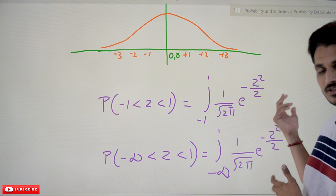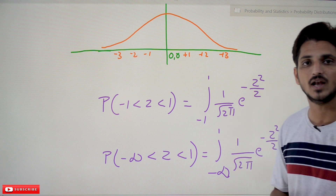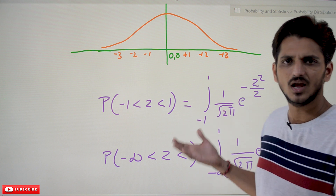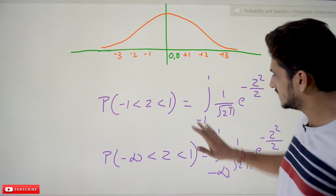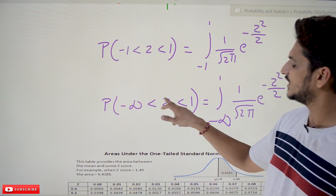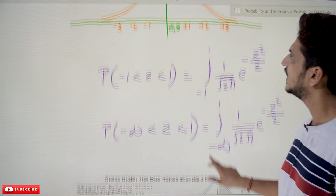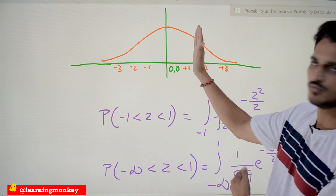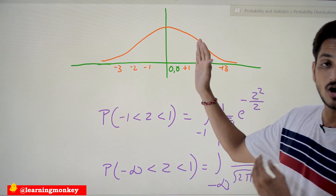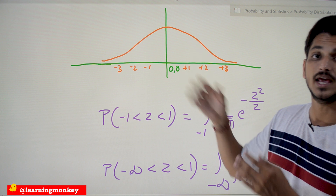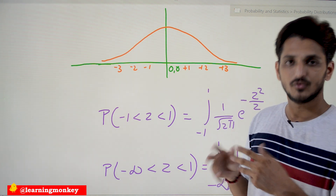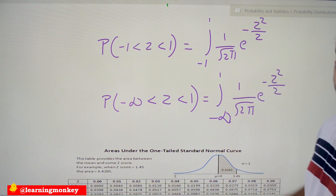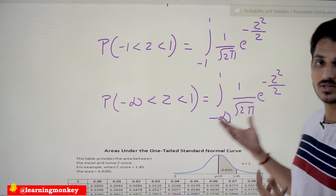But is it easy to do this mathematics every time? No, it is not. For example, if someone asks for P(−∞ < Z < 1), they want the area from minus infinity to 1 under the curve. The integral from −∞ to 1 of the standard normal equation is complex to solve every time. Finding probabilities this way is complex.